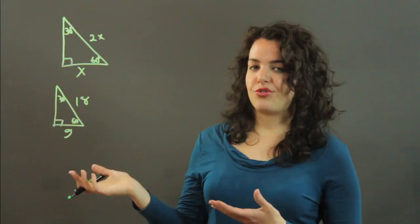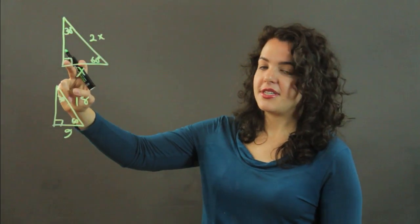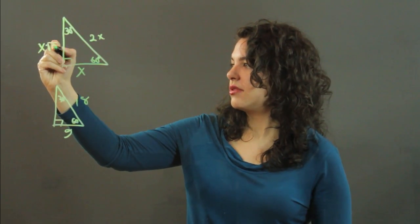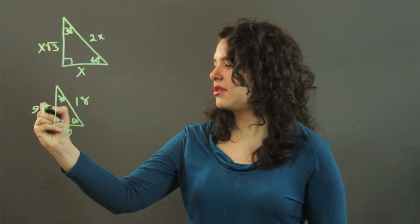And, just for a little additional information, the side opposite the 60 degree angle is x root 3. So, in this case, it would be 9 root 3.